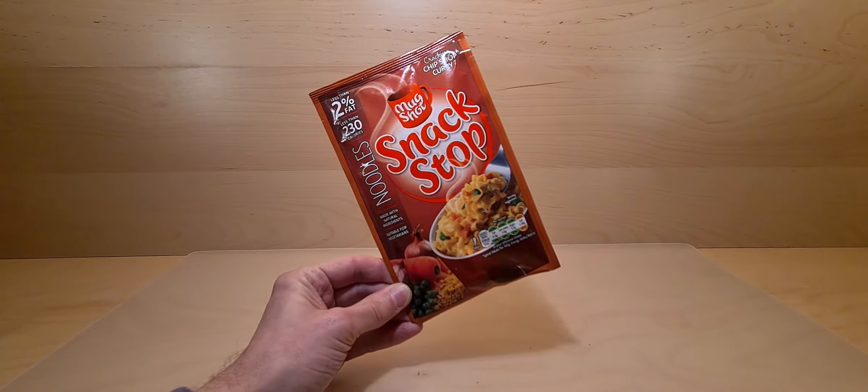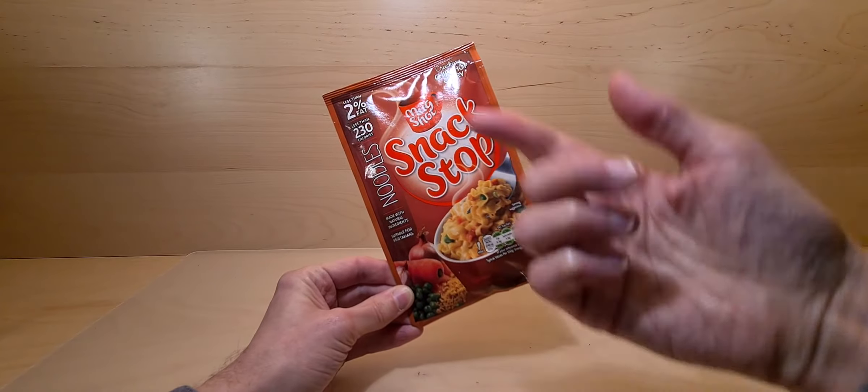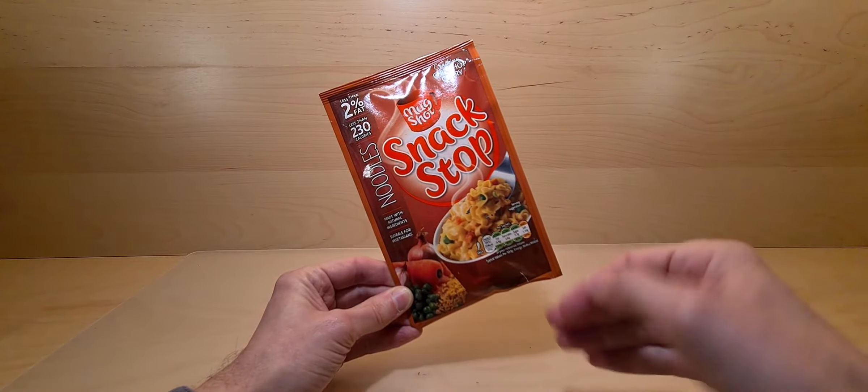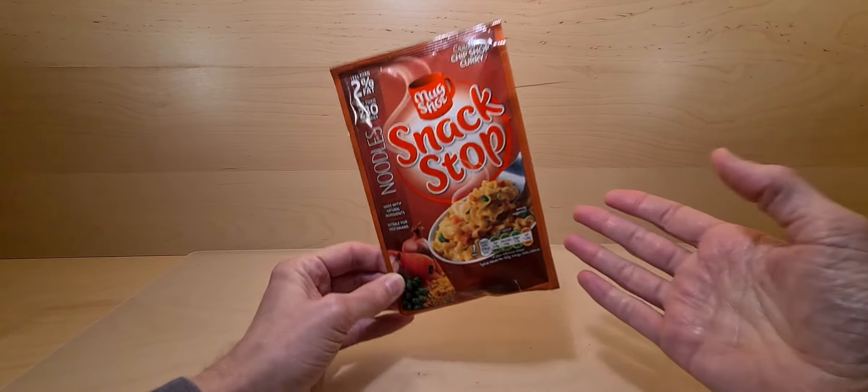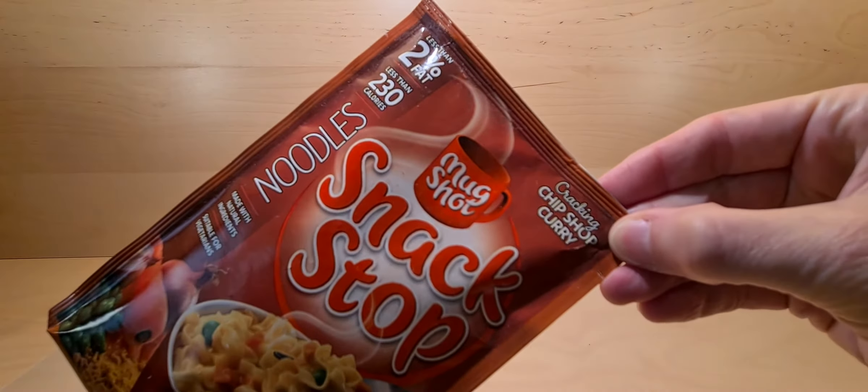Time for a snack. This is from Mugshots, they're snack stops. They're noodles. You can see all this on the packet. This came from Pound Stretchers and it is cracking chip shop curry.